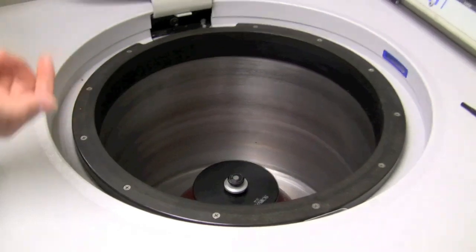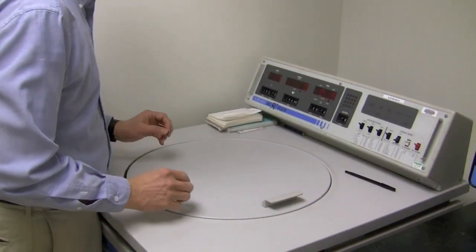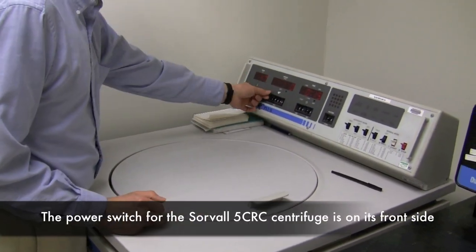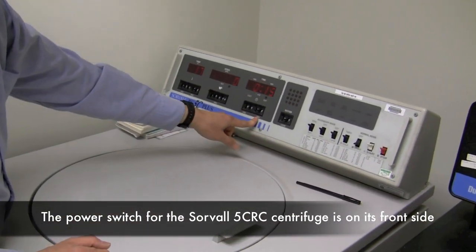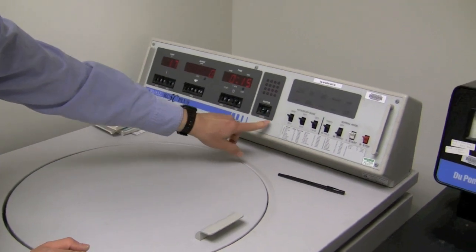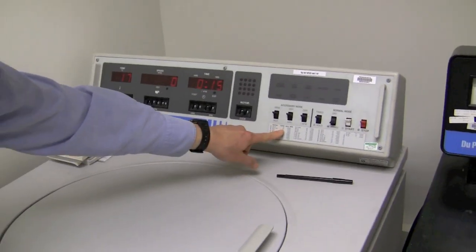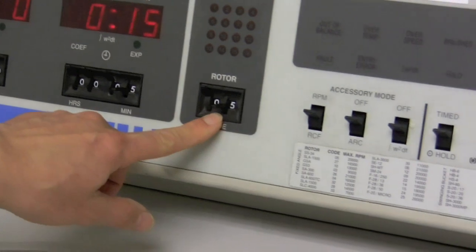All right, close the lid. And I would like to spin it at 13,000 RPM for five minutes, and this is the SS-34 rotor, which is rotor code five. So that's why it's zero five here.